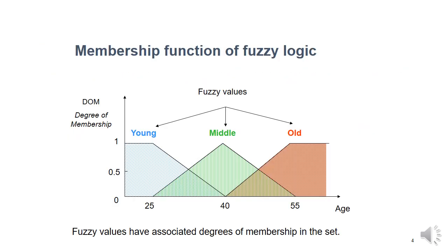So in classical logic, a proposition assumes a truth value of either 0 or 1. But in Fuzzy Logic, a Fuzzy Proposition assumes a truth value between 0 and 1, that is any real number in the closed interval [0, 1]. Therefore, classical logic is usually called binary or two-valued logic, and Fuzzy Logic is generally known as multi-valued logic. In this example, Fuzzy values are represented as young, middle, and old. Fuzzy values have an associated degree of membership in the set.